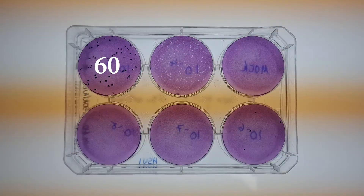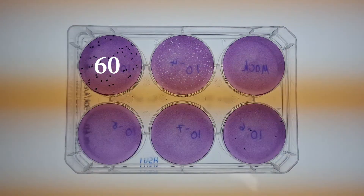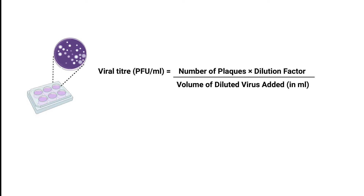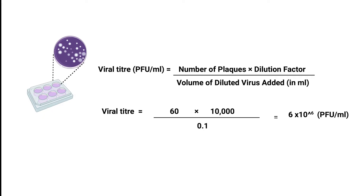In this case, at a dilution of 10 to the minus 5, we can count 60 plaques. Once we have this count, we apply the dilution factor and the volume of the virus added using this formula. Like that, we obtain the virus concentration in the original sample, expressed as plaque-forming units per milliliter.